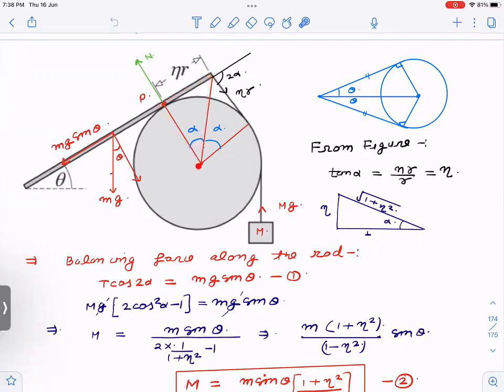In this triangle, tan α is equal to ηr divided by r, so tan α is equal to η.